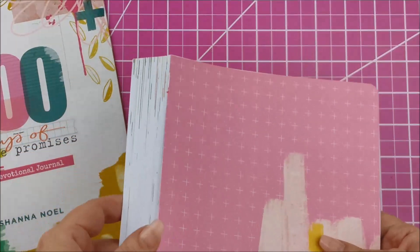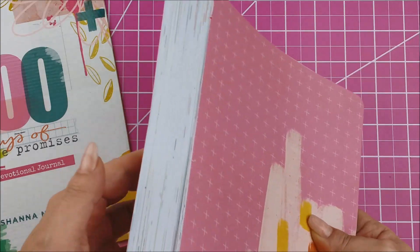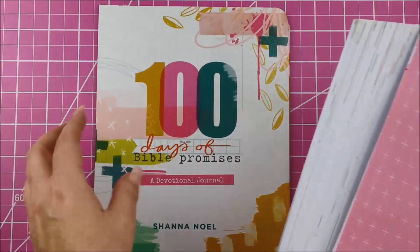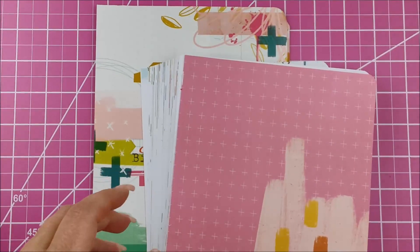Now, again, I have this jumbo gigantuan paper cutter, and I was able to do this all in one cut. I did do the cover separate, but once you have this spine off, you could easily just go through with an X-Acto knife and just peel these apart.